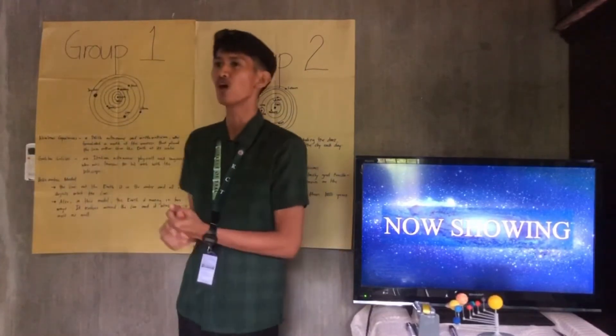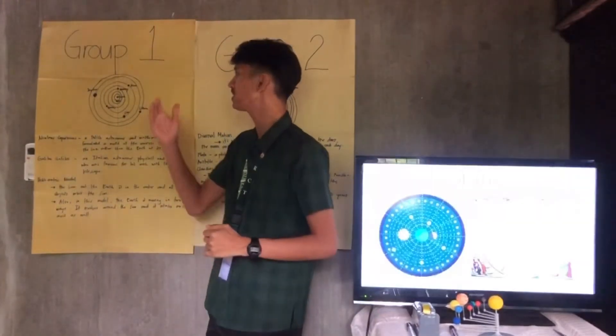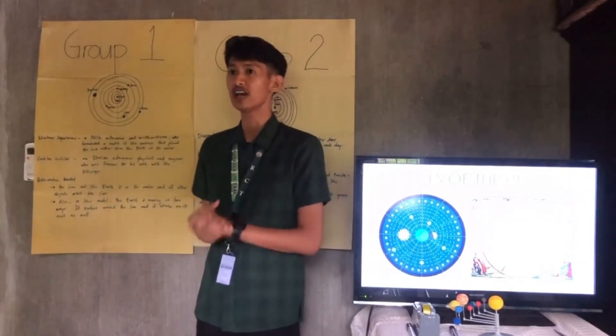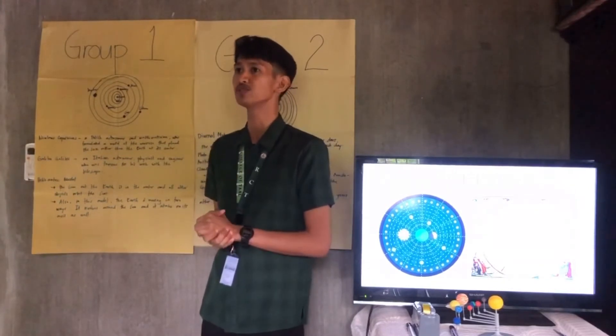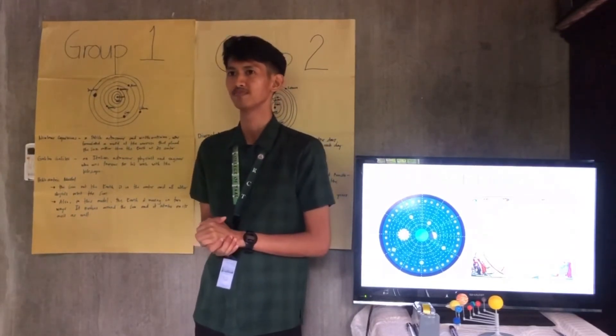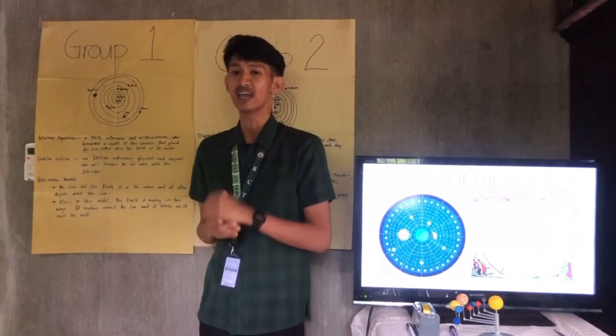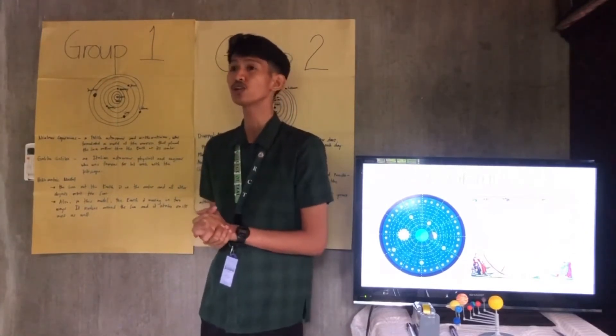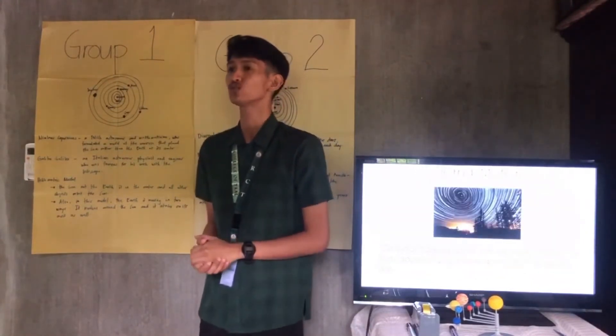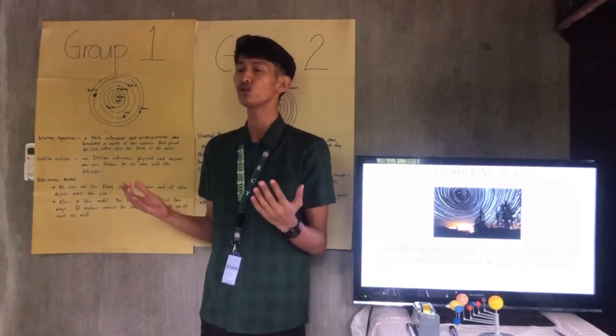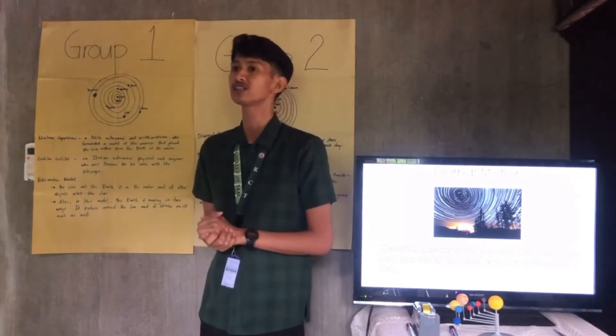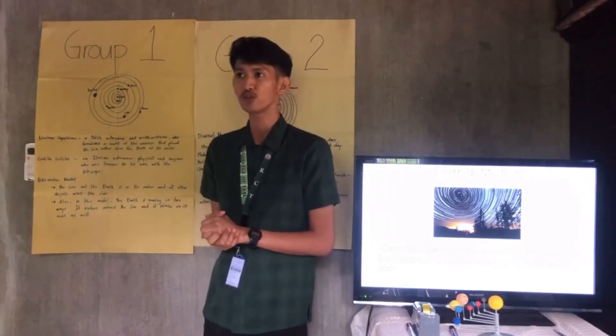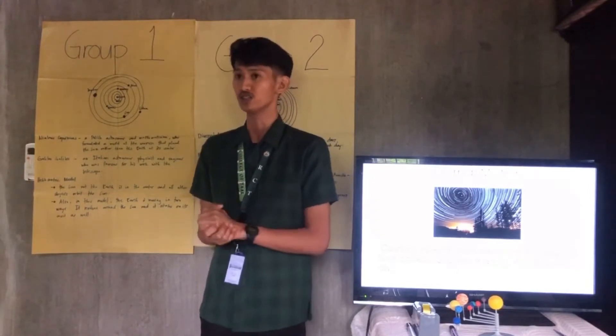Now, for group one, what do you call the apparent daily motion of the celestial objects across the sky from daytime to nighttime? Yes, that's correct! It's called diurnal motion. It's when celestial bodies, including the stars, planets, the moon, and the sun appear to move across the sky each day.